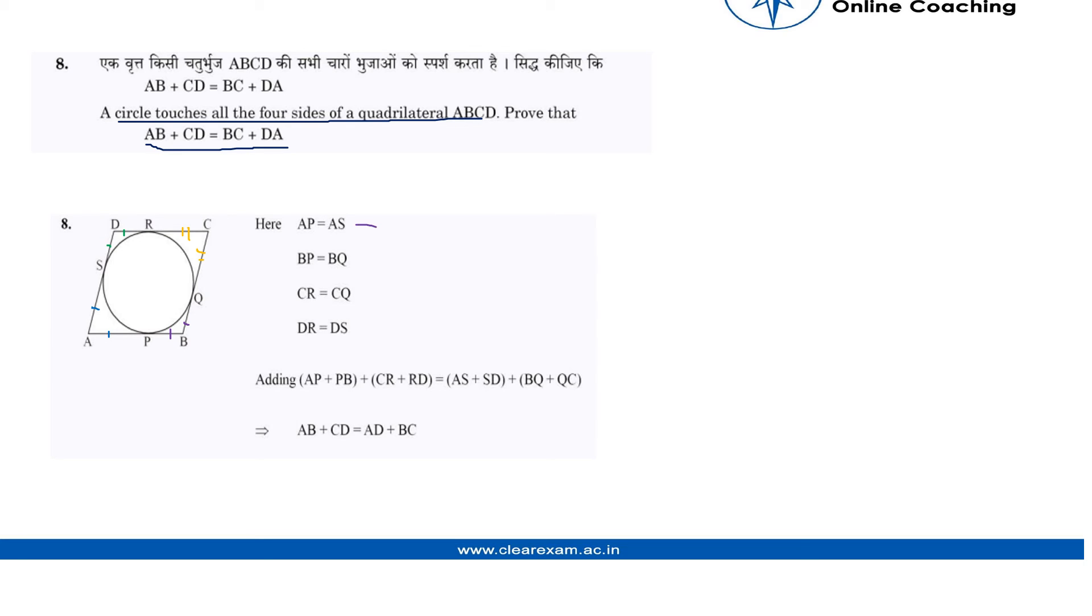So we get these equations, four equations. Now adding all these four equations, left hand side would be coming on left and right would be coming on right. We get this and simply joining the lines, we get what we have to prove, which is AB plus CD equals AD plus BC. I hope everyone is clear.